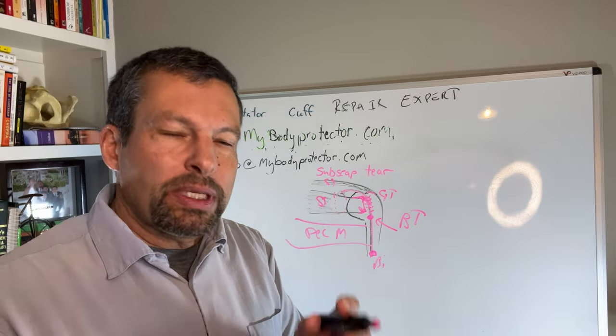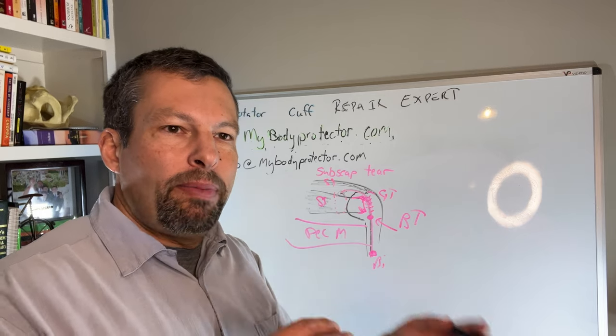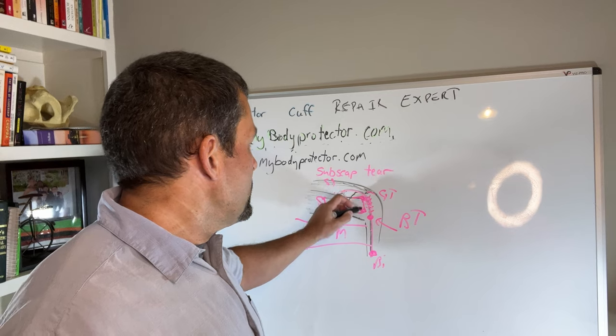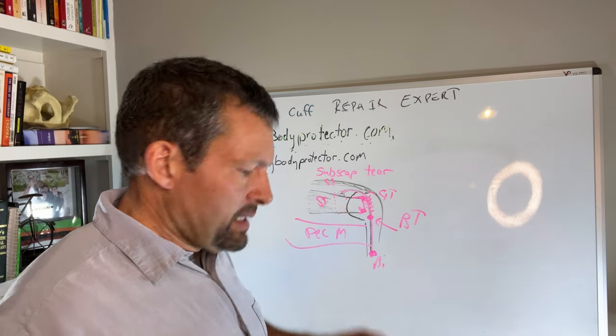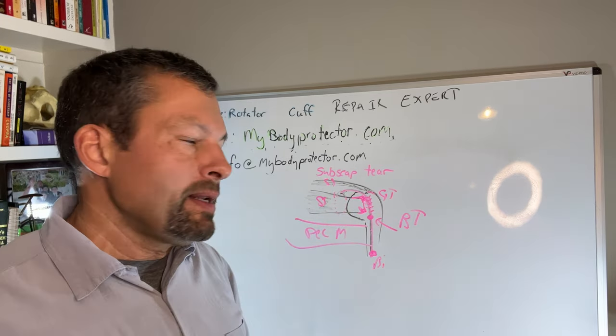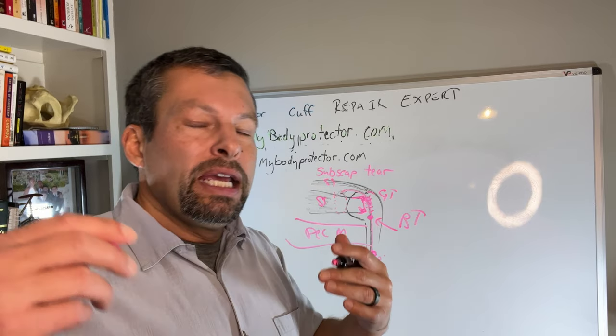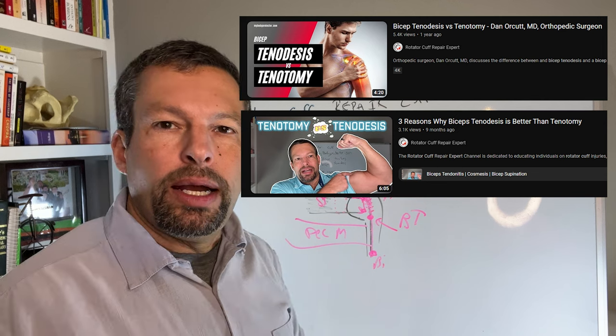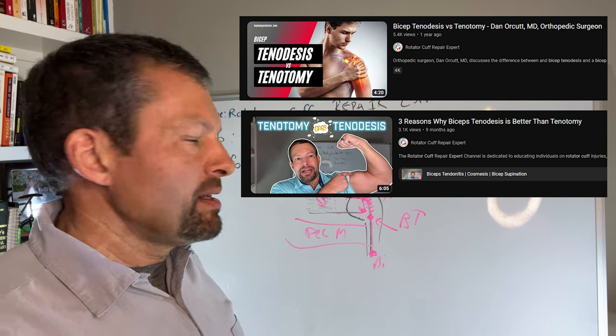But if we do a subscapularis repair and a biceps, well, we're right there. So it's really quite easy to repair the subscapularis and repair the biceps tendon or tenodesis biceps tendon. There's a bunch of videos I have about biceps tenodesis. So if you're interested in that, certainly look those up where we show you the biceps tenodesis video.